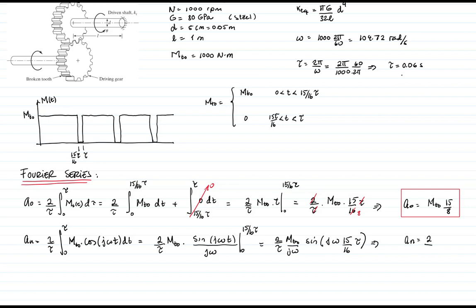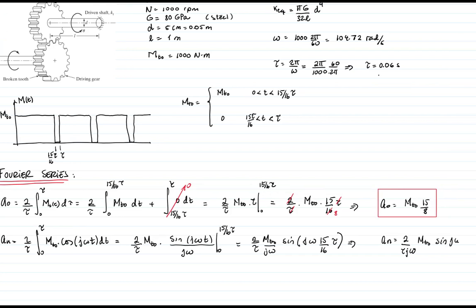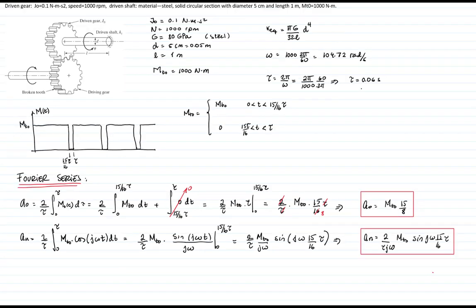This equals 2/(τ j ω) mₜ sine(j ω × 15/16 τ). Remember that tau, we have the value, which is 0.06 seconds.